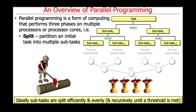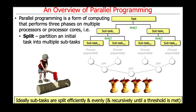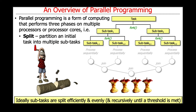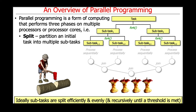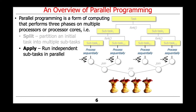This often requires recursively traversing through the data structure and splitting again and again until you get things down to bite-sized atomic units that can then run sequentially but all together. The second phase is the apply phase, and this is all about running these independent subtasks in parallel.